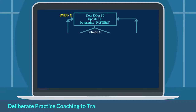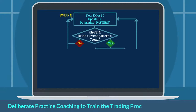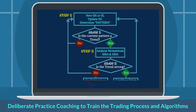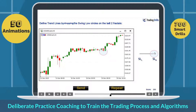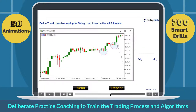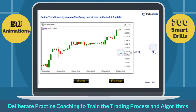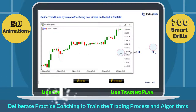The system trains the trading process and algorithmic decision making skills under deliberate practice coaching, by using over 50 animations to train the trading process and 700 smart drills to develop algorithmic decision making skills. This makes Price Action Algo Trading a combined live trading plan and a live coaching system.